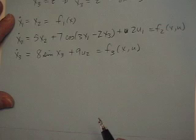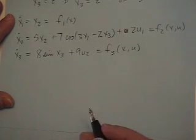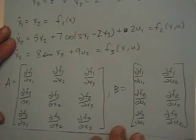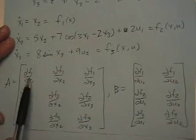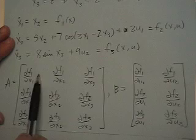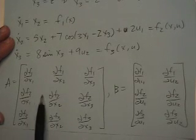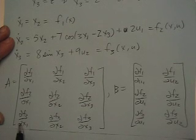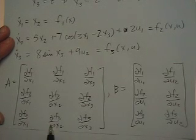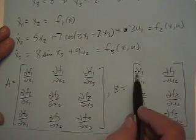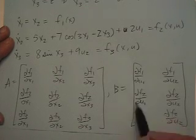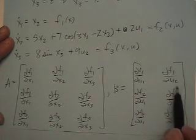Now we want to find our A, B, C, D matrices, so we need to take a bunch of partial derivatives. A is the Jacobian matrix — the top row is all partials of f1, the second row is partials of f2, the third row is f3, and each column corresponds to x1, x2, x3. A similar structure applies for B, where each column corresponds to a different input variable.